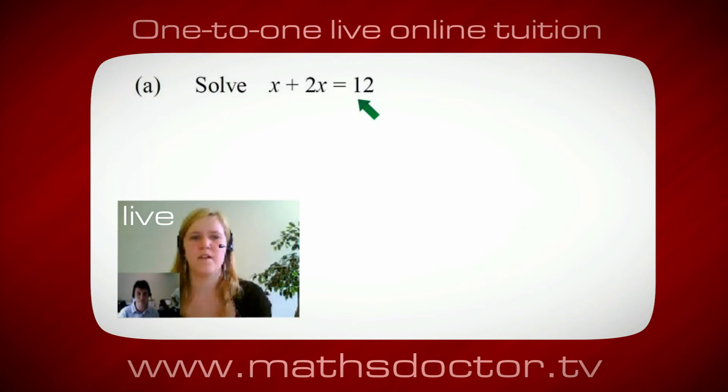OK, well, I want x on its own, so I would put x equals 12 minus 2x.